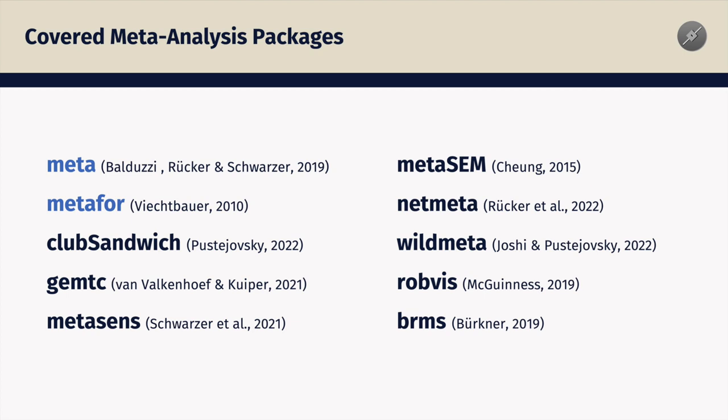Here you can see some core packages that we introduce in the guide. The main workhorses are meta and metafor — two excellent and well-documented packages that are helpful in a variety of contexts. We also introduce packages that focus on a specific type of meta-analysis, such as GMTC and NetMeta for network meta-analysis, or MetaSEM for meta-analytic structural equation modeling.